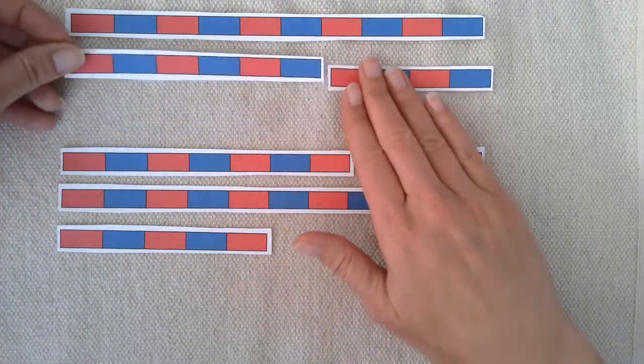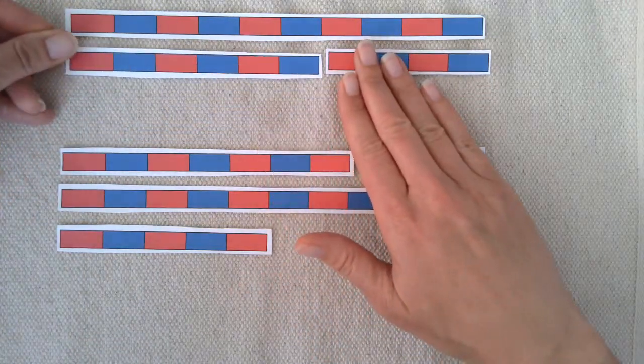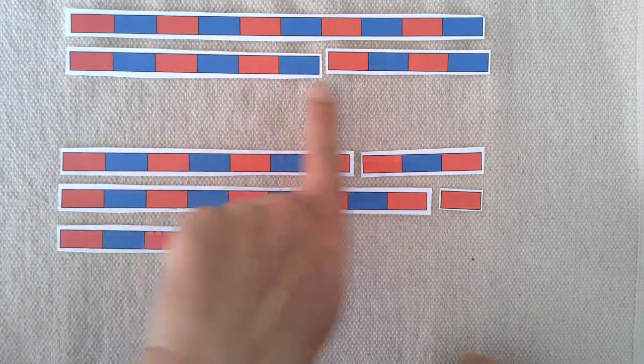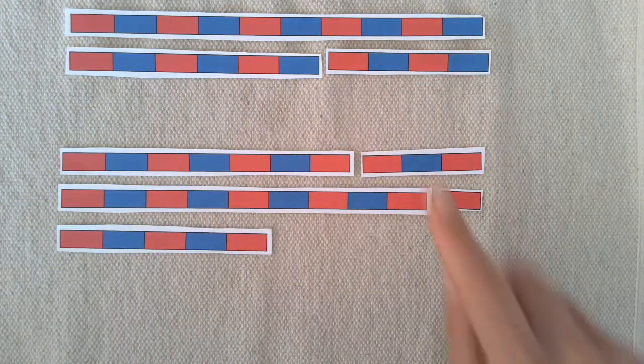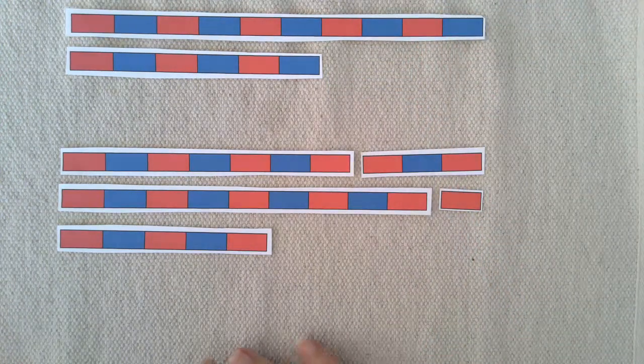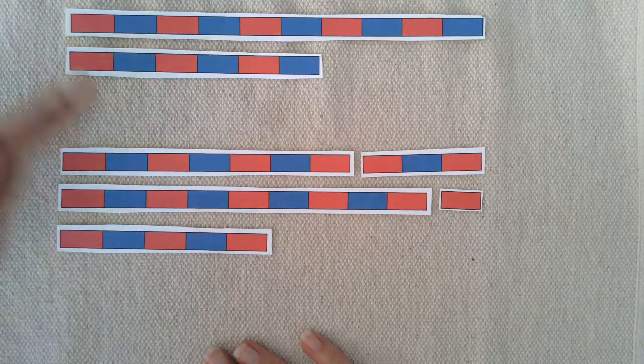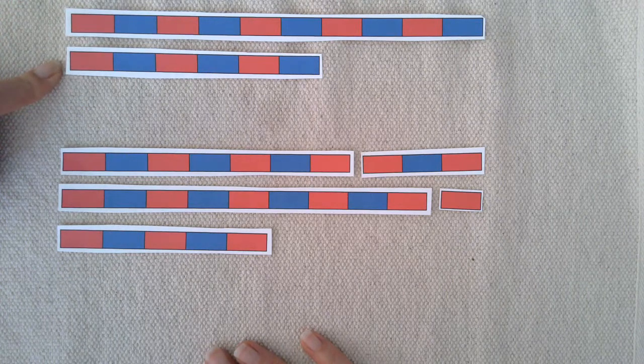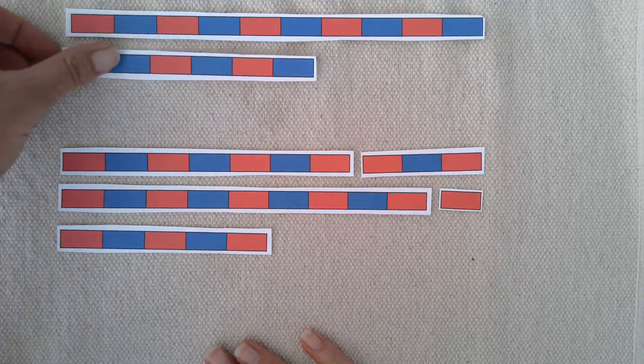Okay, we can do the same with the other combinations. Here we have 10 again. If I take four away, how much do I have left? Yes, I have six left. 10 minus 4 equals 6.